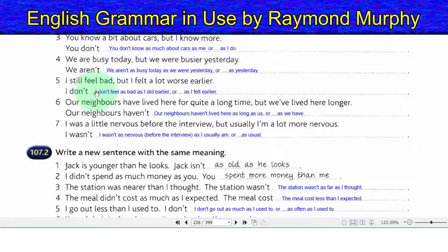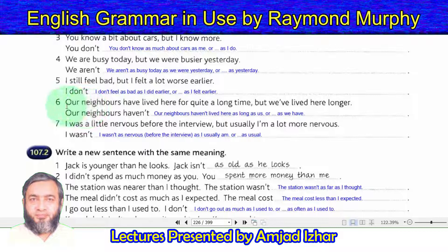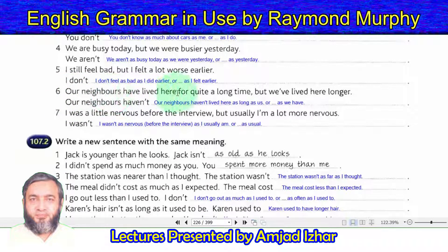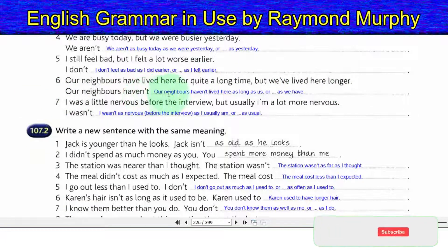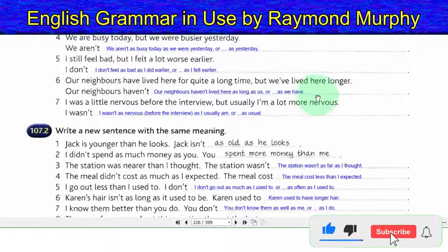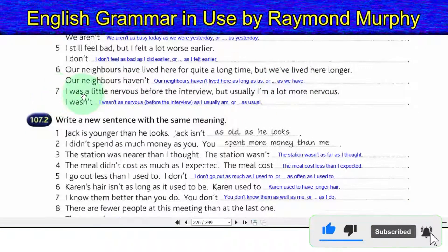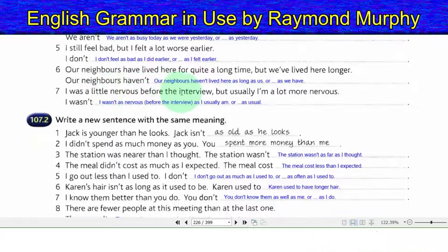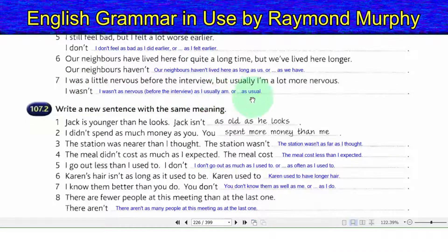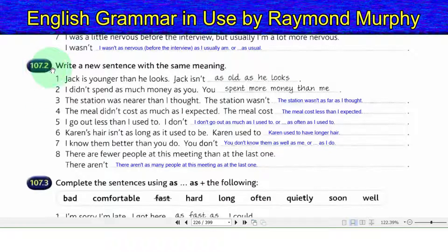5. I still feel bad but I felt a lot worse earlier: I do not feel as bad as I did earlier. 6. Our neighbors have lived here for quite a long time but we have lived here longer: our neighbors have not lived here as long as us (or as we have). 7. I was a little nervous before the interview but usually I am a lot more nervous: I was not as nervous before the interview as I usually am (or as usual).